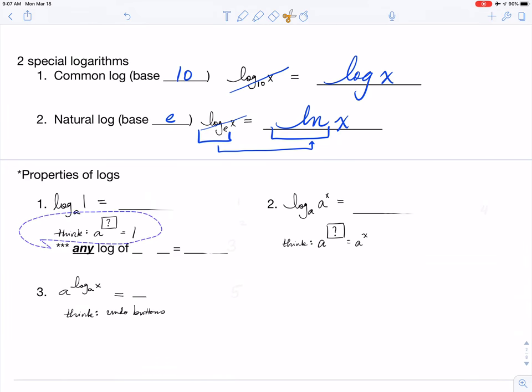If you look over at property number two, it says log base a of a to the x power is going to equal what. Once again I've given you a hint here, so I'm not just leaving you alone for your embedded question. So a to what power is the same thing as a to the x? Whatever you fill in that question mark is what's going to go in your answer blank.